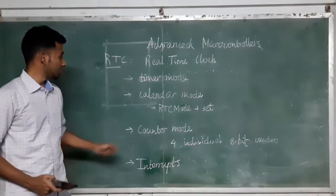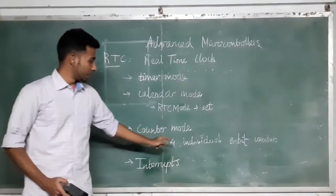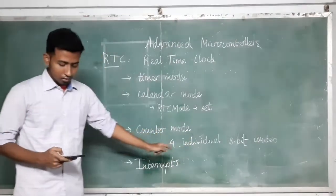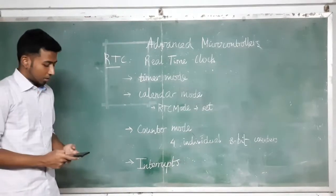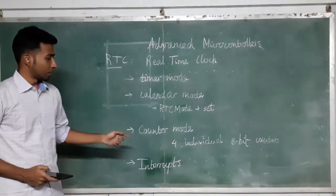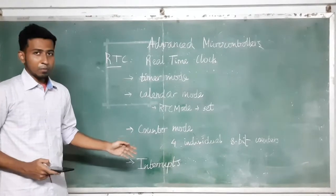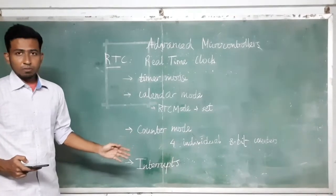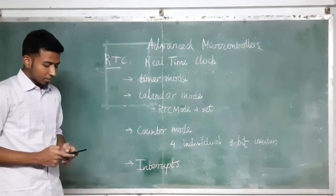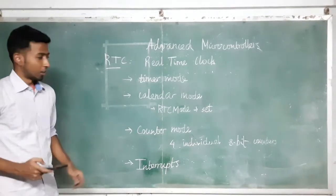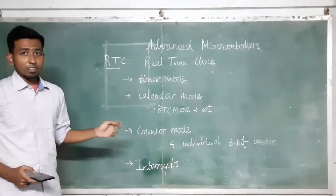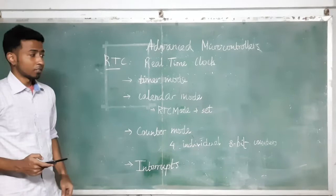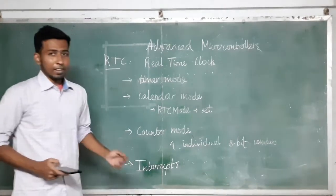In counter mode, there are four individual 8-bit counters to provide a 32-bit counter. This provides interrupt triggers at 8-bit, 16-bit, 24-bit and 32-bit overflow. For each counter register, RTC counter 1 to 4 is individually accessible and may be read or written.